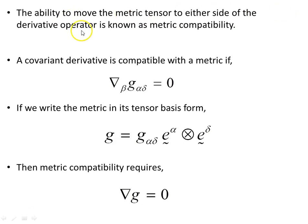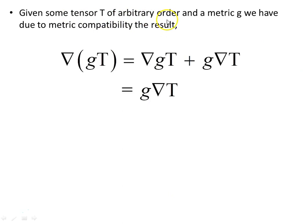The ability to move the metric tensor to either side of the derivative operator is known as metric compatibility. A covariant derivative is compatible with a metric if the covariant derivative of the metric is zero. Writing the metric in its tensor basis form G, where G equals G-alpha-delta times the tensor product of the basis vectors, metric compatibility requires the covariant derivative of G to be zero. In general, given some tensor T of arbitrary rank and a metric G, metric compatibility means that the covariant derivative of the product G times T equals the metric times the covariant derivative of T, since the covariant derivative of the metric is always zero.